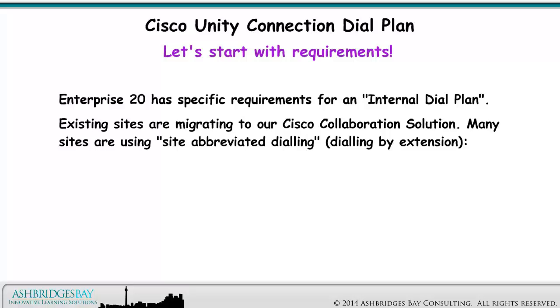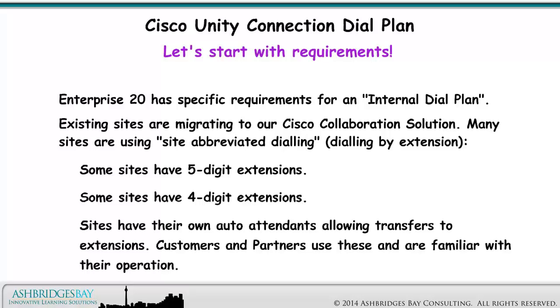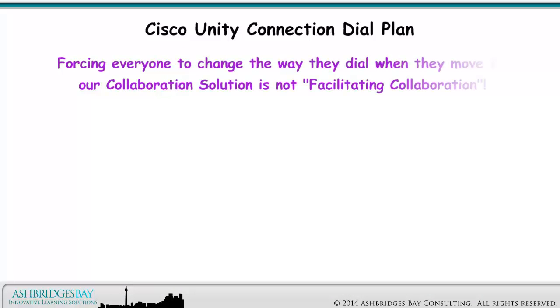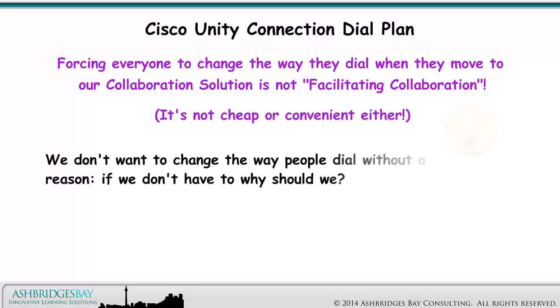Many sites are using site abbreviated dialing — dialing by extension. Some sites have 5-digit extensions, some sites have 4-digit extensions. Sites have their own auto-attendants, allowing transfers to extensions. Customers and partners use these and are familiar with their operation. Forcing everyone to change the way they dial when they move to our collaboration solution is not facilitating collaboration. It's not cheap or convenient either.